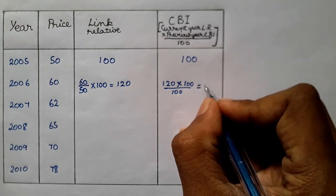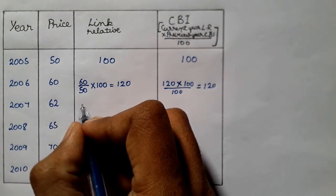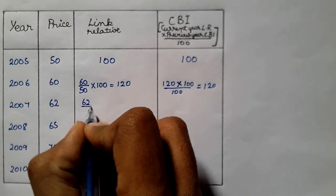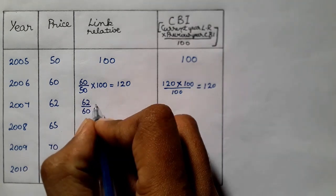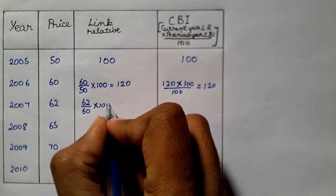Now, it will span the link-related to 62. So, 62 is 60. This will be 60. So, 62 divided by 60. Now, again 100. So, this does solve, 103.33.